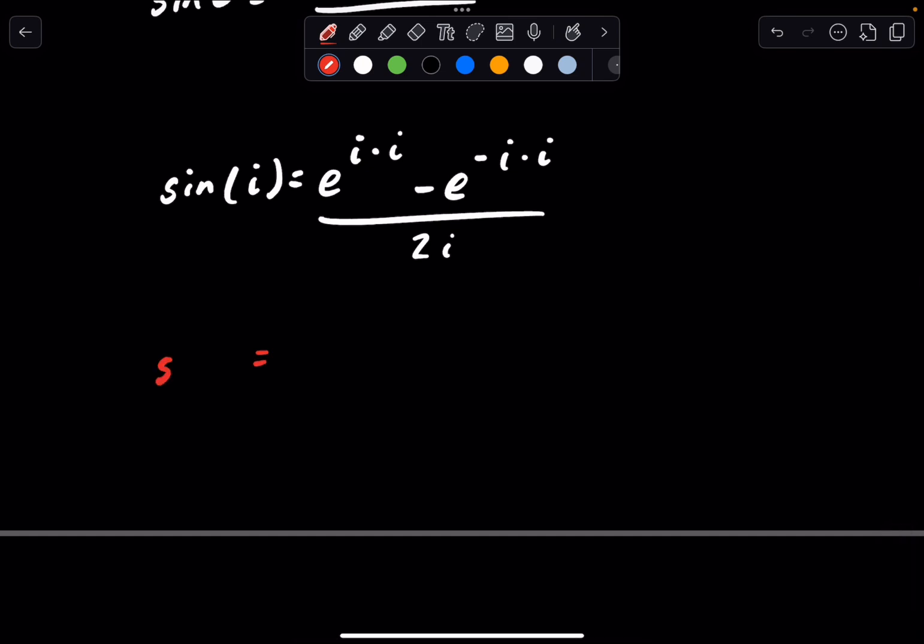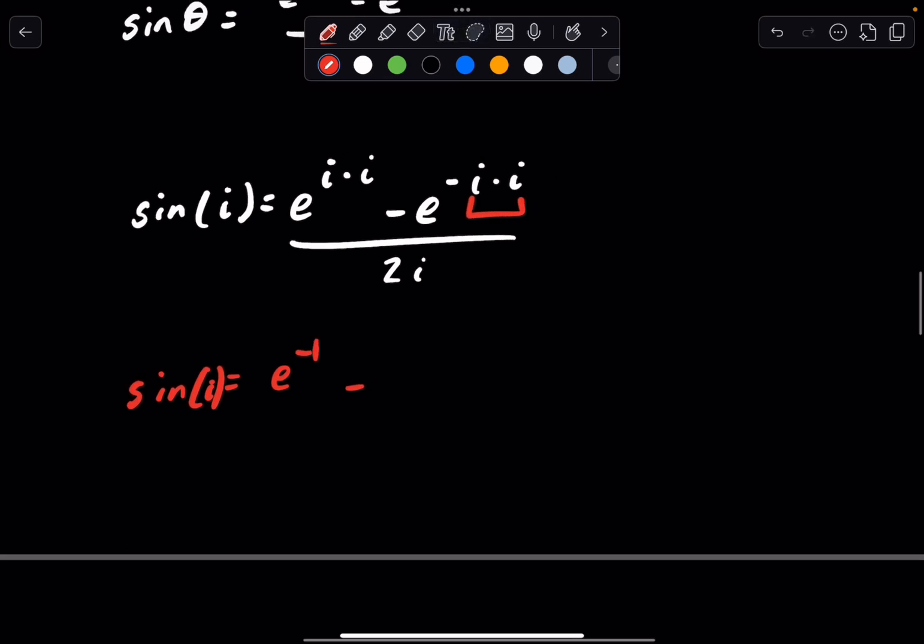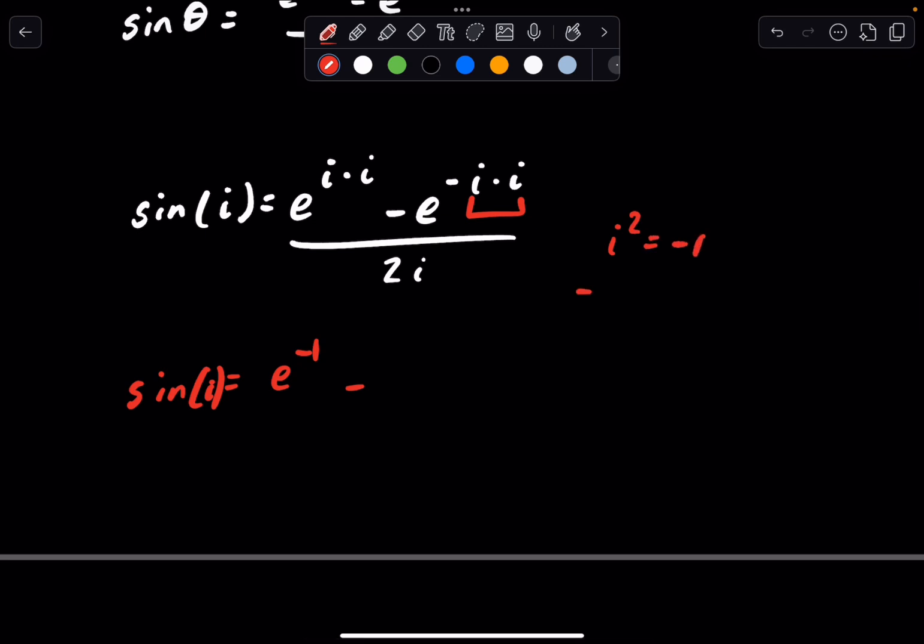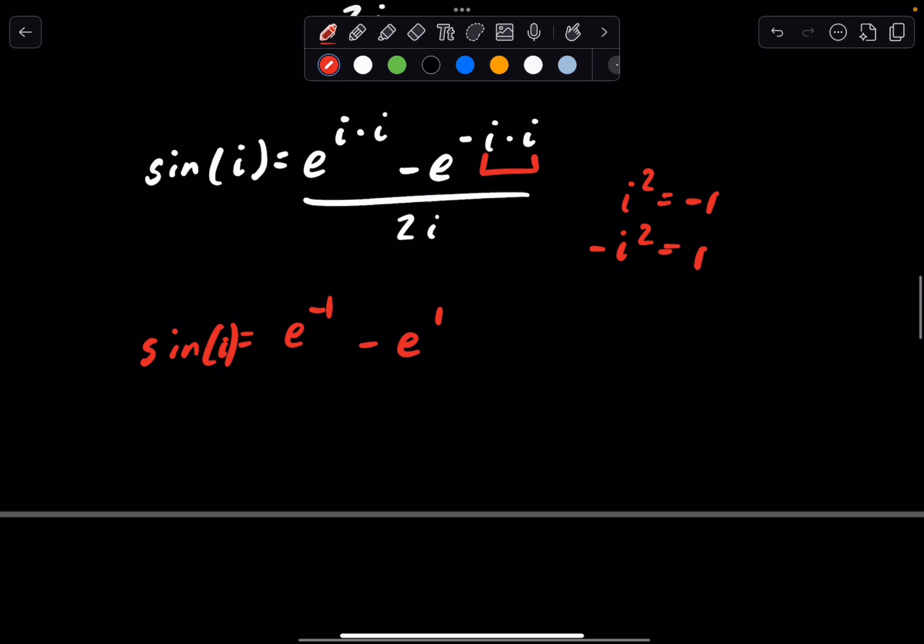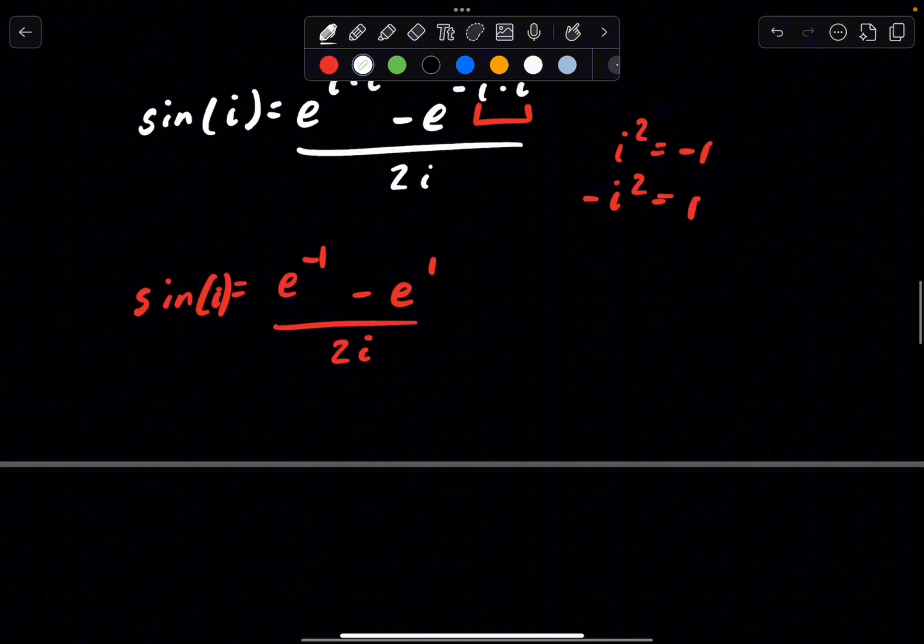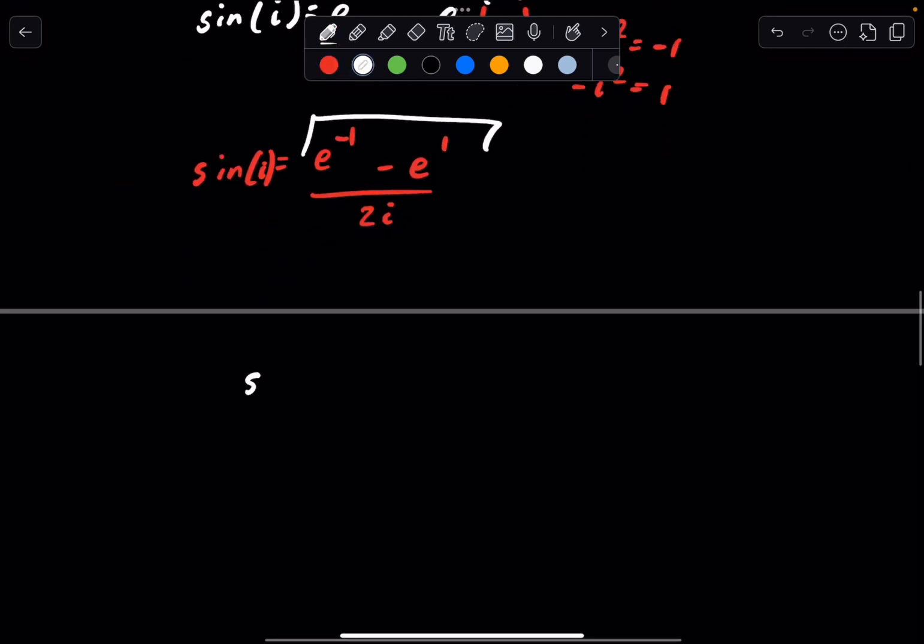That means sine of i is equal to (e^(i times i) - e^(-i times i)) / 2i. Let's simplify a bit. We get sine of i is equal to e^(-1), because i squared is negative one, minus what is negative i times i? i squared is negative one, negative i squared is one. So we have minus e^1 all over 2i. And can we do anything more? Let's see. We have sine of i is equal to, I'm going to pull out the negative, we get negative (e - 1/e) / 2i. Or you can keep it like e^(-1).